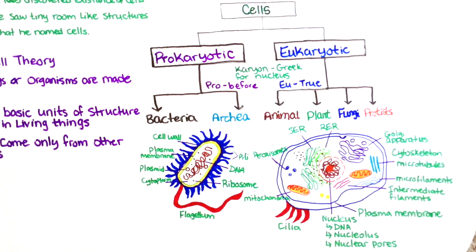The difference between the two is that the rough ER has ribosomes all over its outer surface and serves as the site of protein synthesis, while the smooth endoplasmic reticulum lacks ribosomes and functions in lipid metabolism, carbohydrate metabolism, and detoxification.